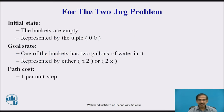For the two-jug problem, the first criterion is to identify initial states. The initial state is both buckets empty, represented by the tuple (0, 0) — the first zero for the first bucket and the second zero for the second bucket. The goal state is one bucket having two gallons, represented as either (x, 2) if the second bucket has two gallons, or (2, x) if the first bucket has two gallons. The path cost is considered to be one per unit step.